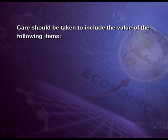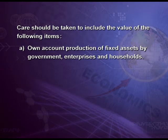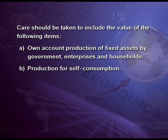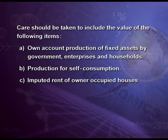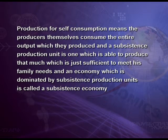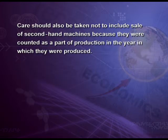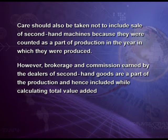Care should be taken to include the value of: own-account production of fixed assets by government, enterprises and households; production for self-consumption, which is not sold; and imputed rent of owner-occupied houses. Production for self-consumption means the producers themselves consume the entire output they produced. Care should also be taken not to include sale of second-hand machines, as they were already counted in the year they were produced. However, brokerage and commission earned by dealers of second-hand goods are part of production and hence included while calculating total value added.